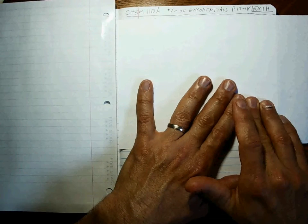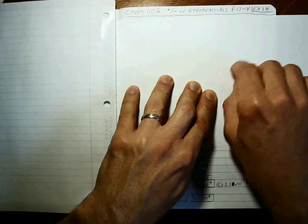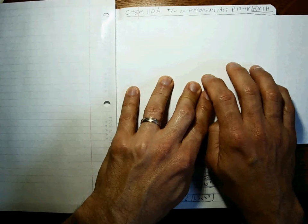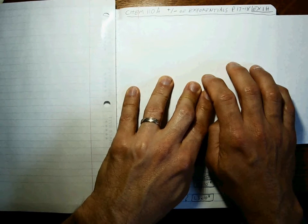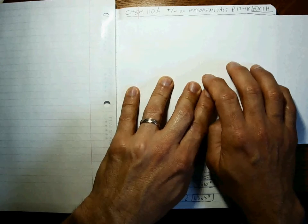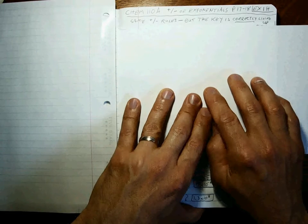Okay, so now we're doing addition and subtraction of exponentials. This is on page 17 and 18, Exercises 1H. This is a problem set that gives students some issues, and you just have to be careful. But in a way, it's the same rules that you've always messed around with.